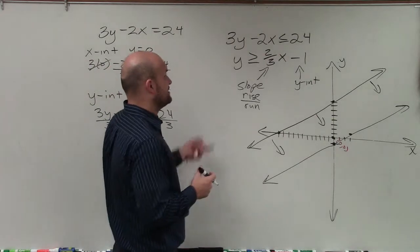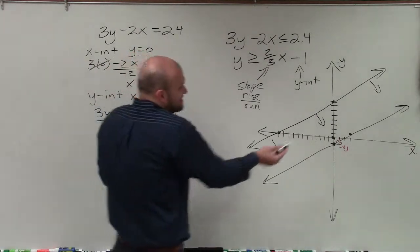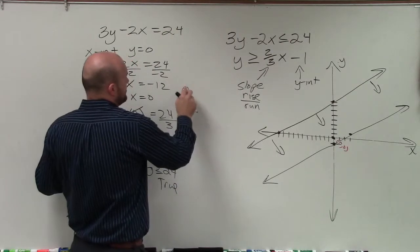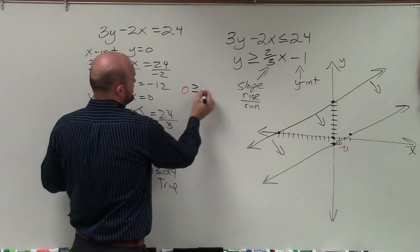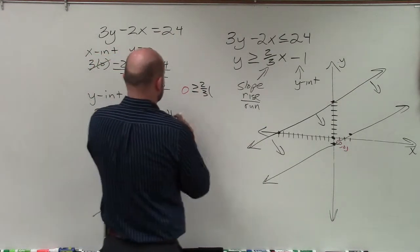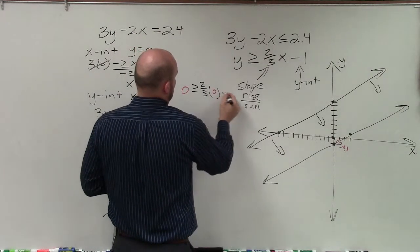let's go ahead and do the same thing for this test point. And again, since 0, 0 does not go on that point, I'm going to plug in 0, 0. So I plug in 0 in for y. It's less than or equal to 2 thirds times 0 minus 1.